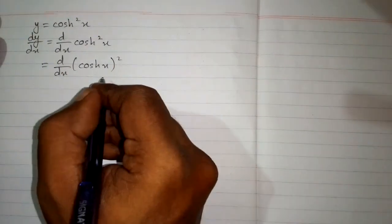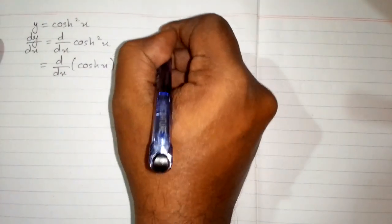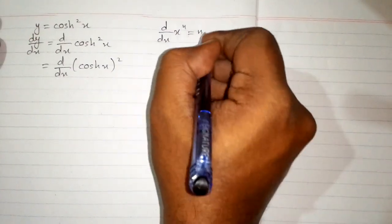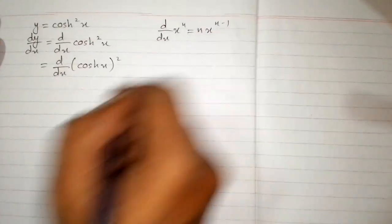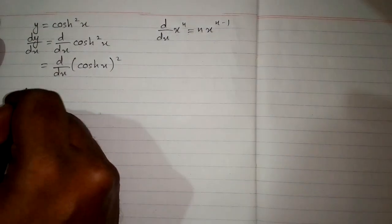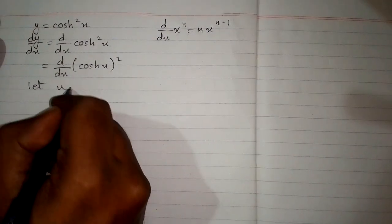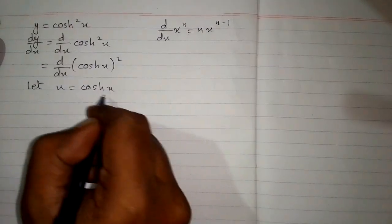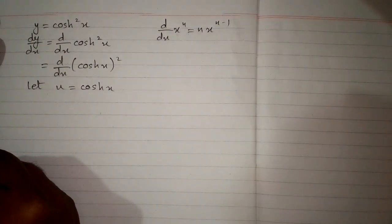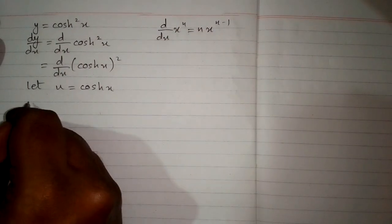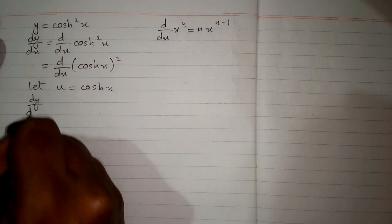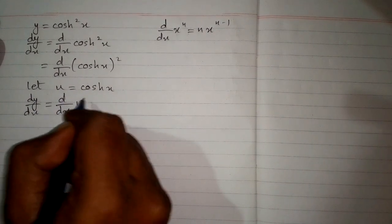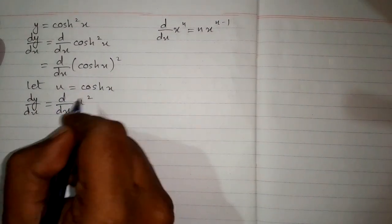Now we can apply the power rule of differentiation, which is d by dx of x to the power n is equal to n times x to the power n minus 1. So we will suppose that hyperbolic cosine of x is u, so we can write u in place of hyperbolic cosine of x.